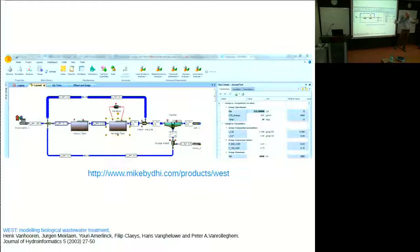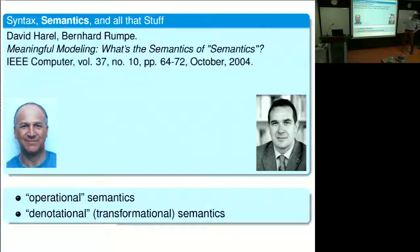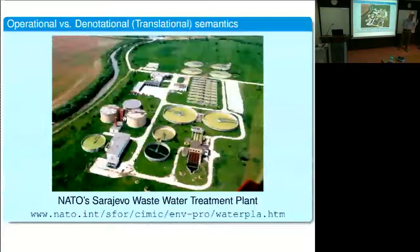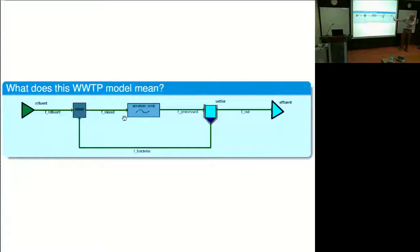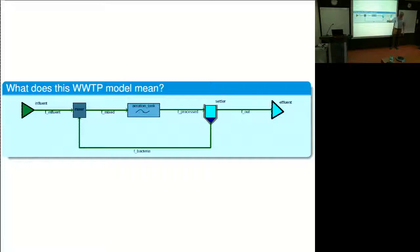Stepping back to say more about modeling languages: Harrell and Trumpe wrote a 2004 IEEE Computer paper called 'Meaningful Modeling: What's the Meaning of Meaning?' If I look at my wastewater treatment plant model, I want to model the real thing using a diagram. I give meaning in a translational way: where there was a mixer, I place a sum, giving a mathematical interpretation in the form of a Simulink causal block diagram—a synchronous data flow representation. I then translate that into differential algebraic equations.